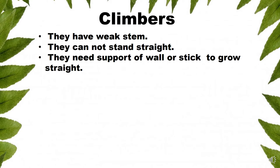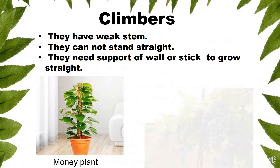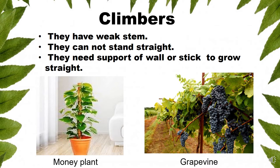Climbers — they have a weak stem. They cannot stand straight and need the support of a wall or a stick to grow straight. For example, money plant and grapevine.